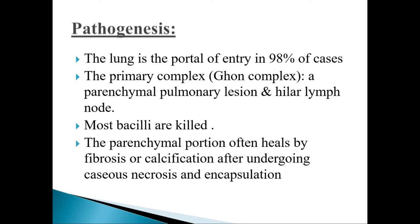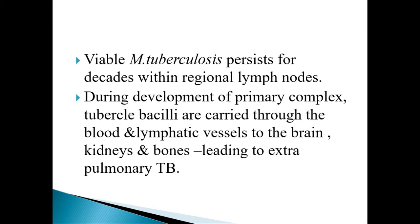Pathogenesis: the lung is the portal of entry in about 98% of cases. After entering the lungs, it forms what is called the primary complex or Ghon complex, consisting of a parenchymal pulmonary lesion and hilar lymph node. Enhancing cell-mediated immunity, most of the bacilli are killed. The parenchymal portion often heals by fibrosis or calcification after undergoing caseous necrosis and encapsulation. Viable Mycobacterium tuberculosis persists for decades within regional lymph nodes.